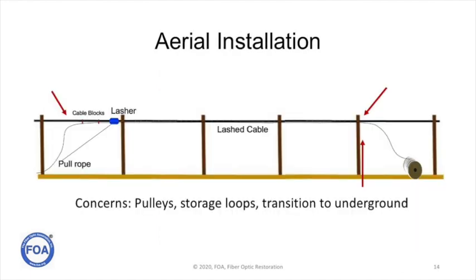For aerial cable, whether you're installing lashed cable to a messenger, ADSS cable, or even figure-eight cable, the concerns are very much the same for bend radius. You have pulleys that are often used to bring the cable up from the ground to the telecom space to the messenger where the cable is being installed. Once you install it, you have storage loops to worry about, and you have transition to underground — and those are all points where one has to be concerned about the bend radius of the cable.